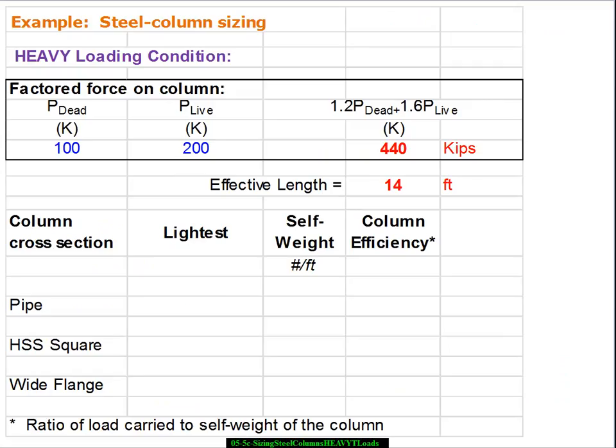By heavy load in this case we're going to put the dead load at 100 kips, the live load at 200, and then we'll have a factored load of 440.